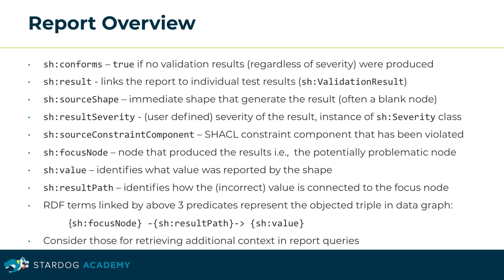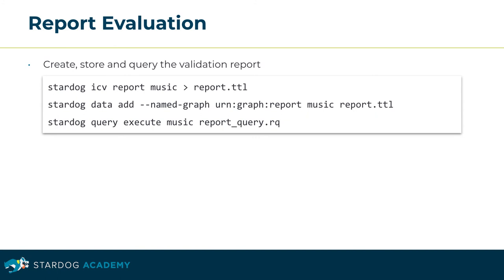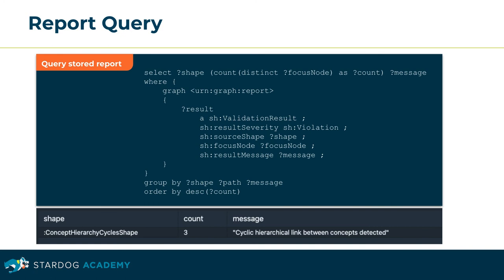You may query the data graph to retrieve additional context on those nodes. SHACL validation reports may be persisted, aggregated, and queried as arbitrary RDF data. The command 'stardoc icv report' will generate a report which is in turn persisted by the 'stardoc data add' command. The command 'stardoc query execute' may apply an analytical query serving an upstream evaluation. The example query retrieves shapes with the most validation results, indicating the prominent kind of issues. This concludes the section on evaluating SHACL validation reports.